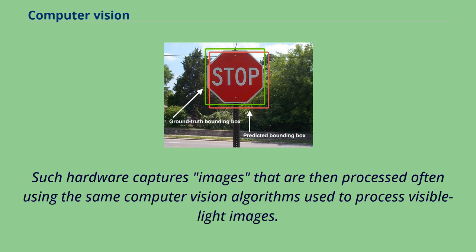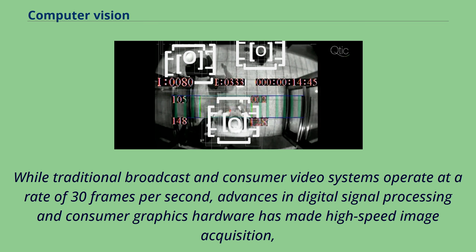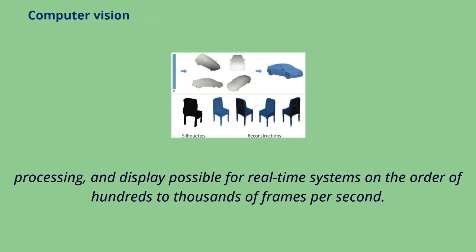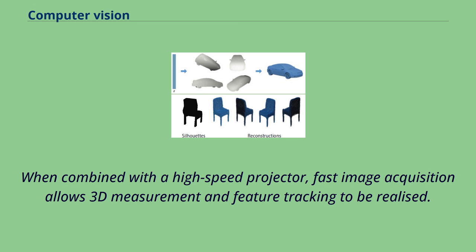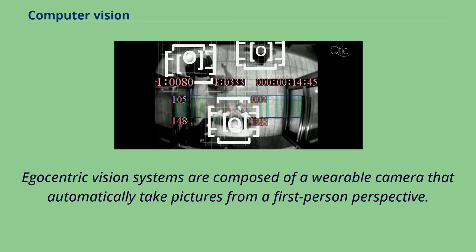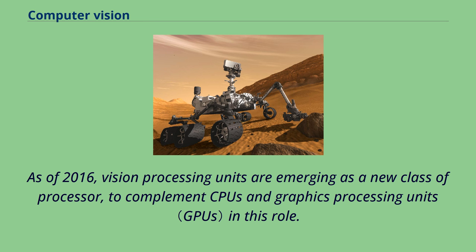While traditional broadcast and consumer video systems operate at a rate of 30 frames per second, advances in digital signal processing and consumer graphics hardware have made high-speed image acquisition, processing and display possible for real-time systems on the order of hundreds to thousands of frames per second. For applications in robotics, fast real-time video systems are critically important and can simplify the processing needed for certain algorithms. When combined with a high-speed projector, fast image acquisition allows 3D measurement and feature tracking to be realized. As of 2016, vision processing units are emerging as a new class of processor to complement CPUs and graphics processing units in this role.